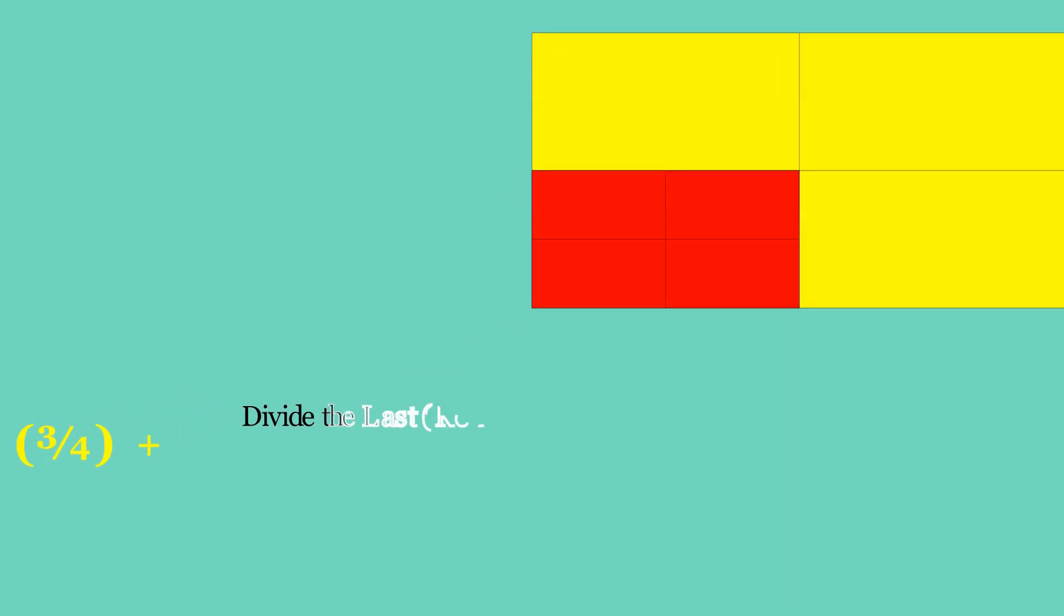Now divide the last remaining small rectangle, the red one, into four equal mini rectangles with each mini rectangle having area equals one fourth times one fourth. Add the first three mini rectangles with their sum being equal to three quarters squared, three by four raised to the power two.